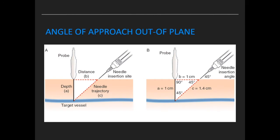In the out-of-plane approach, the needle path can be estimated using the Pythagorean theorem, whereby the needle is inserted at a 45-degree angle and the path of the needle is approximately 1.4 times as long as the measured depth of the vessel.